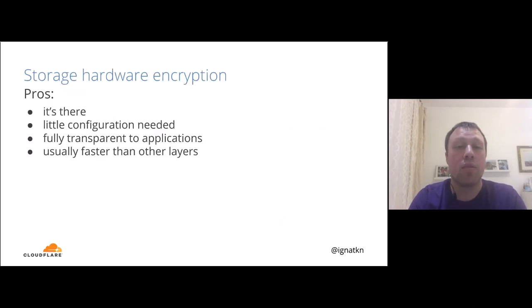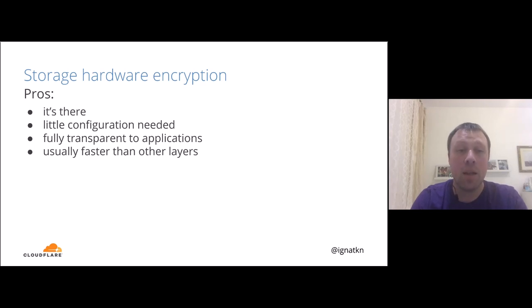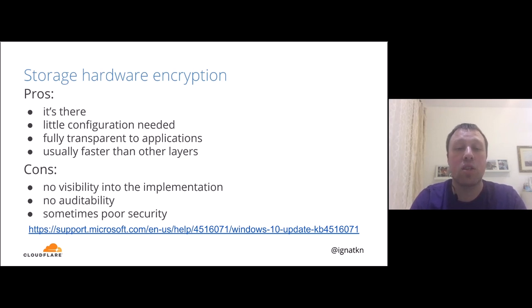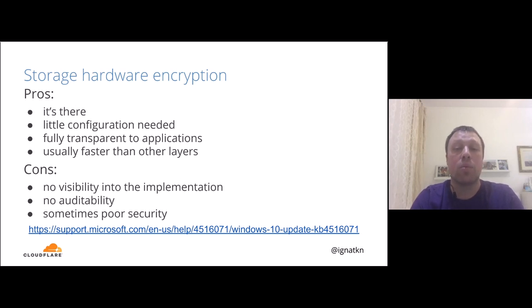Each approach has pros and cons. For storage hardware encryption: it's simple, fully transparent to applications, and usually faster because you don't waste host CPU cycles on encryption. The downsides are that most implementations are proprietary with no auditability, which sometimes leads to poor security. Recent findings show that some self-encrypting drive implementations are so bad that Microsoft decided to switch to software-based disk encryption by default in Windows.